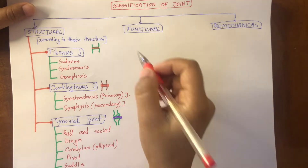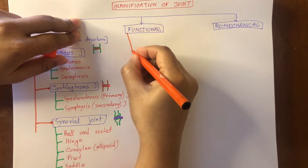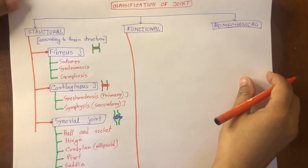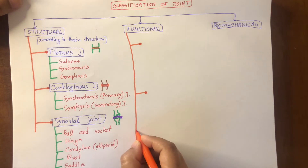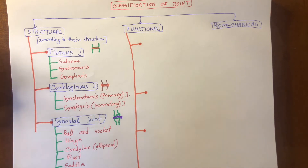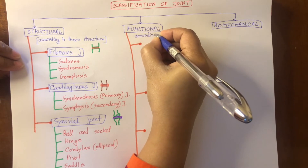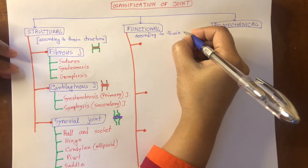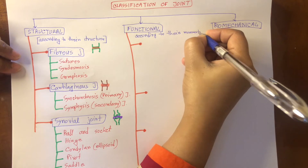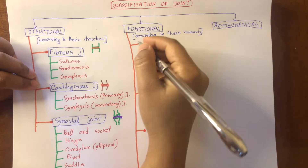Now let's move on to functional classification. Functionally, we can classify joints into three types. This classification is according to their function or movements — different degrees of movements. These are: synarthrosis,